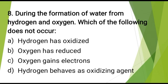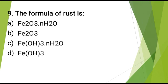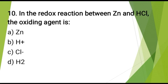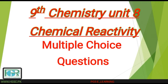During the formation of water from hydrogen and oxygen, which of the following does not occur? The correct answer is: hydrogen behaves as oxidizing agent. The formula of rust is? The correct answer is: Fe₂O₃·H₂O. In the redox reaction between Zn and HCl, the oxidizing agent is? The correct answer is: H⁺.